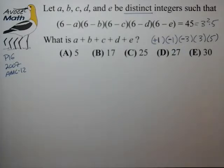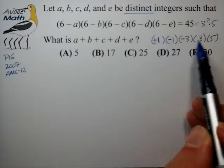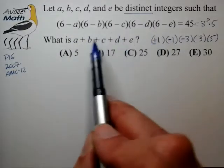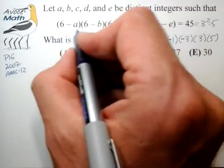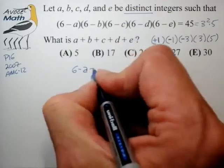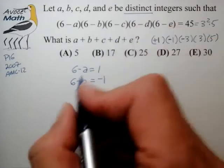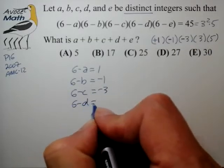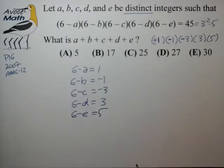Now once we've done that, we can assign these factors to the individual factor groups on the left. As I said, it doesn't really matter how we assign them because the sum is not sensitive to the order or arrangement of the assignment. So let's go ahead and do that: we assign 6 minus a to plus 1, 6 minus b to minus 1, 6 minus c to minus 3, 6 minus d to plus 3, and 6 minus e to plus 5.